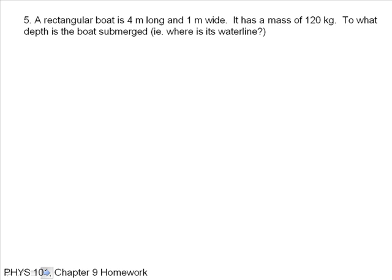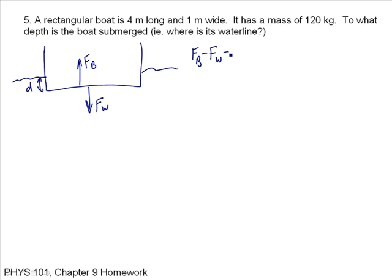The rectangular boat is 4 meters long and 1 meter wide. It has a mass of 120 kilograms. To what depth is the boat submerged? That is, where is its water line? So I have this boat. It's rectangular. I want to know what is this depth. I'll call it D. I have two forces acting on it. I have the buoyant force acting on the boat, and then I have the weight of the boat. And we know that because it's floating, that FB is equal to FW or FB minus FW is equal to zero. The buoyant force is equal to the density of the water, that is the volume of the boat. That's the mass of the displaced water. FW times G gives us its weight minus the mass of the boat times G is equal to zero.